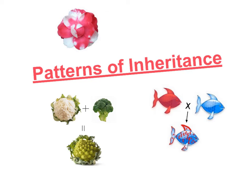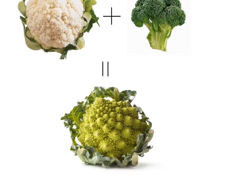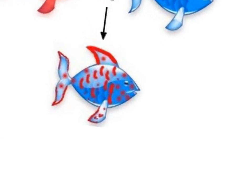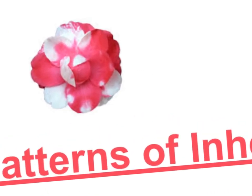For our last topic in genetics, we are going to discuss patterns of inheritance. When Gregor Mendel studied his pea plants back in the 1800s, he was lucky enough to have found an organism with very, very simple genetics. But now we know that organisms are much more complicated than pea plants. Things like broccoli and cauliflower, when they're mixed together, don't take on dominant or recessive traits — they blend. This redfish and bluefish makes a spotted fish. And who can explain what's going on with these flower petals?